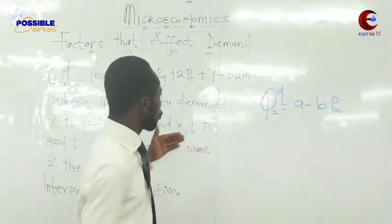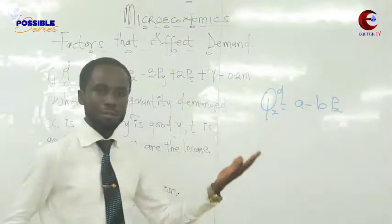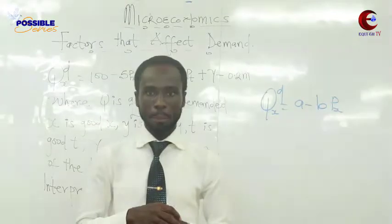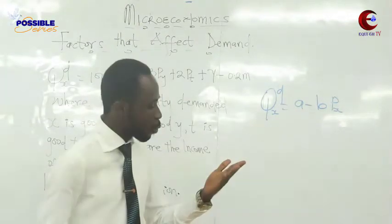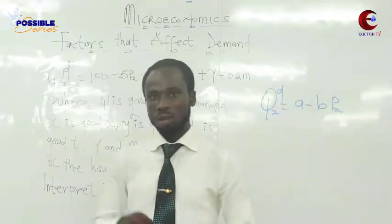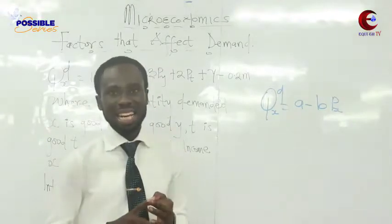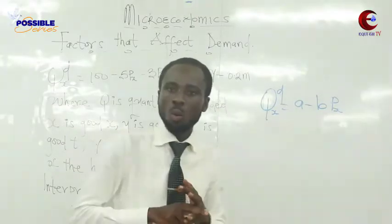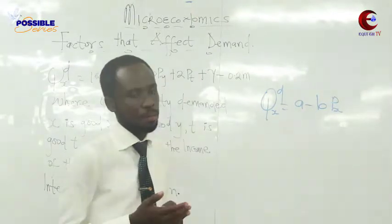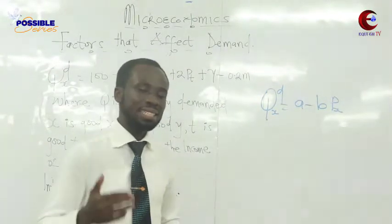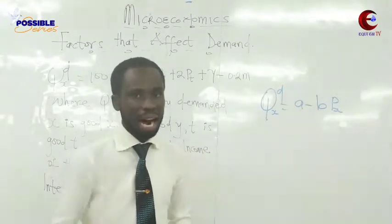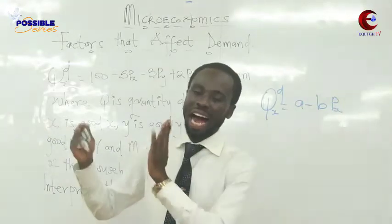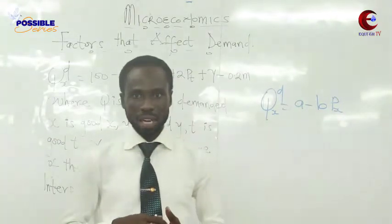So that means that taste and preference, weather and condition, and advertisement — you are not going to factor them. Right now we have three factors: one is the factor that affects change in quantity demanded, which is the own price, and the other two are the factors that affect demand — causing either an outward or inward shift in the demand curve.